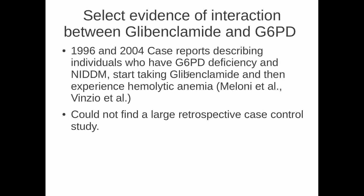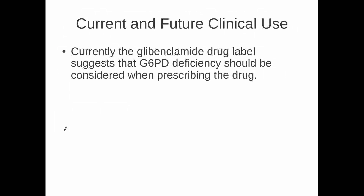There is only select evidence in the literature to indicate an interaction between glibenclamide and glucose-6-phosphate dehydrogenase. In particular, there are two studies — one in 1996 and one in 2004 — which are case reports describing individuals with glucose-6-phosphate dehydrogenase deficiency who also have diabetes, and who experienced hemolytic anemia after starting glibenclamide. I could not find a large retrospective case-control study showing this interaction, and I think that would be a very useful study to perform, if it has not already been done.